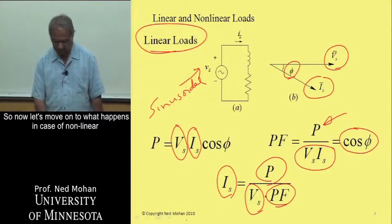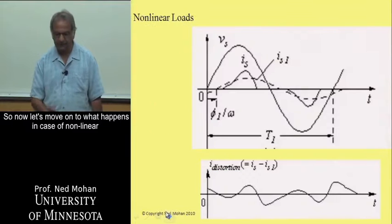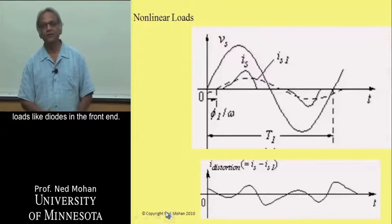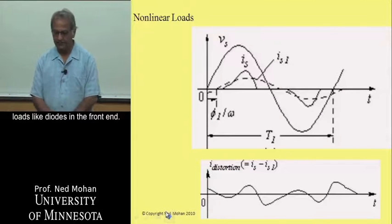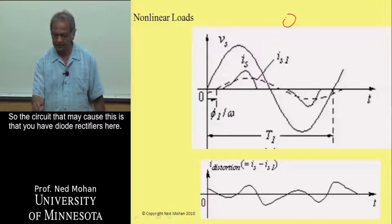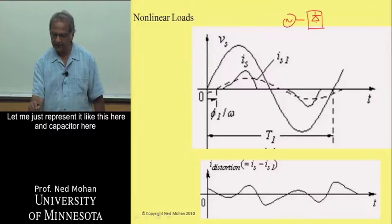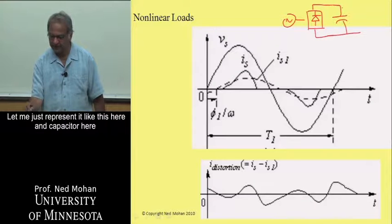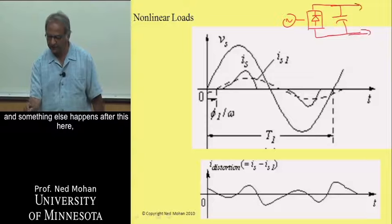So now let's move on to what happens in case of nonlinear loads, like diodes, in the front end. So the circuit that may cause this is that you have a diode rectifier here, and a capacitor here, and something else happens after this here.